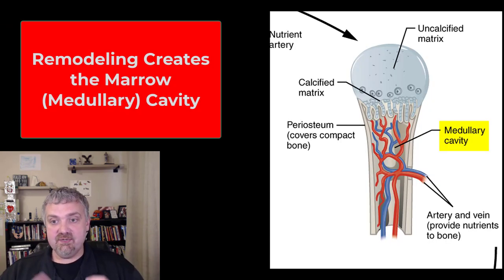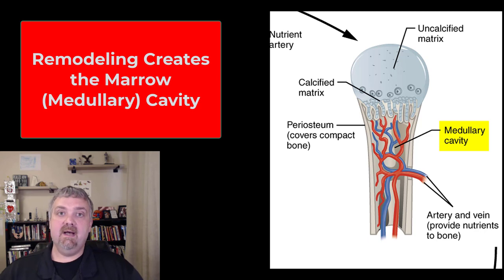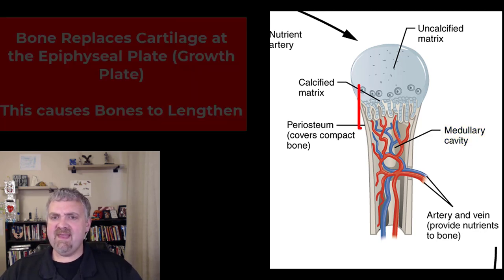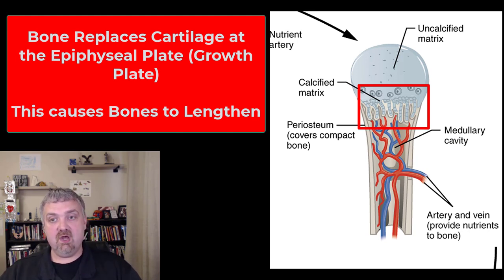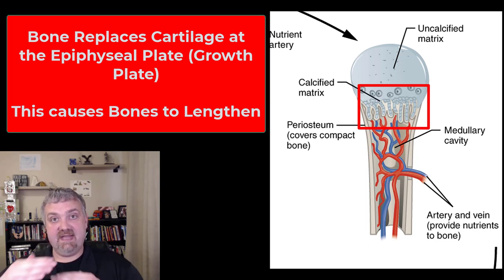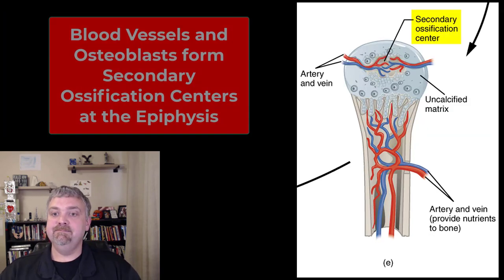Remodeling during this process is going to create the medullary or marrow cavity, which is where your red bone marrow is. Later, some of this will become yellow marrow as well. Then we start to see what's happening at the metaphysis — the space between the shaft of a long bone and the ends. The bone is going to start to replace cartilage there, which is how our bones are going to get longer. That plays a big role in bone lengthening.